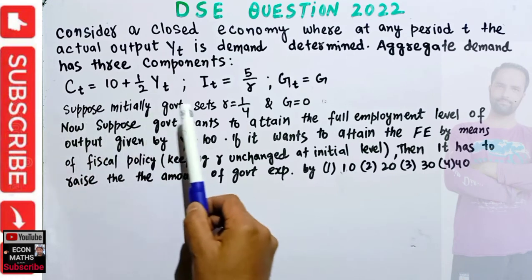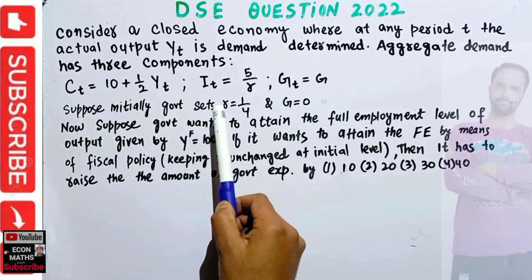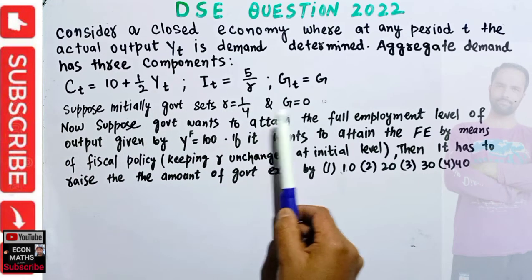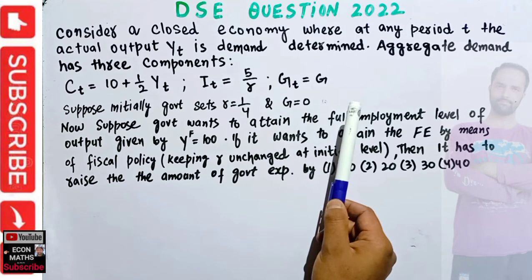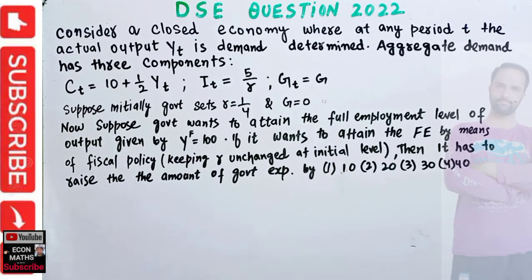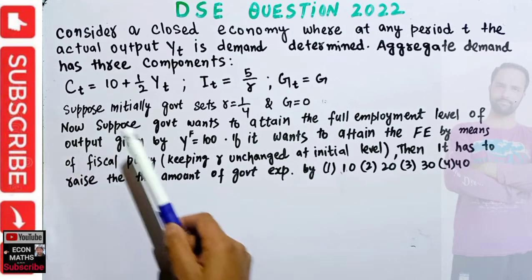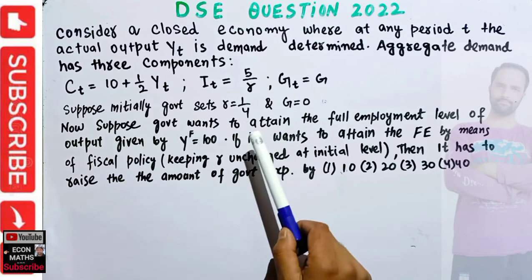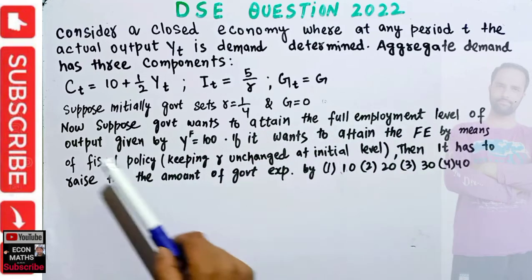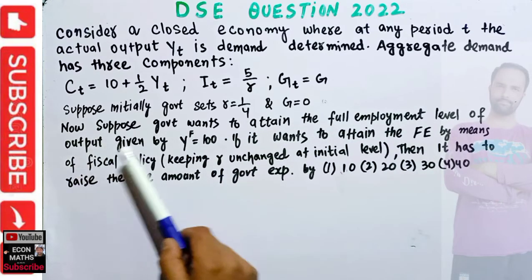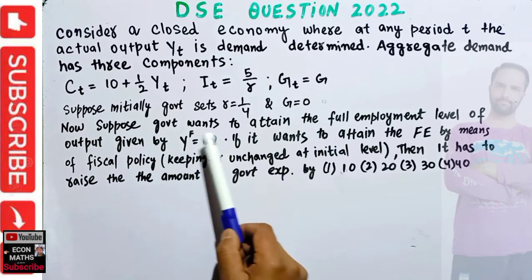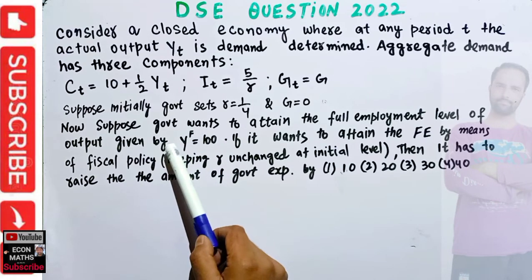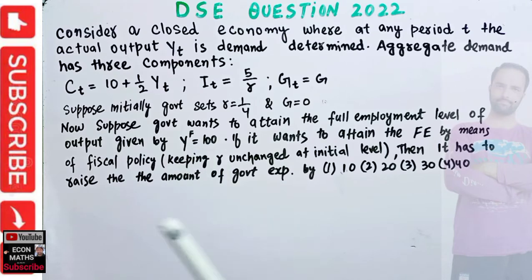Suppose initially the government sets the rate of interest at 1/4 and government expenditure is 0. The government wants to attain the full employment level of output given by yf = 100. So our target is that the full employment level of output should be 100.